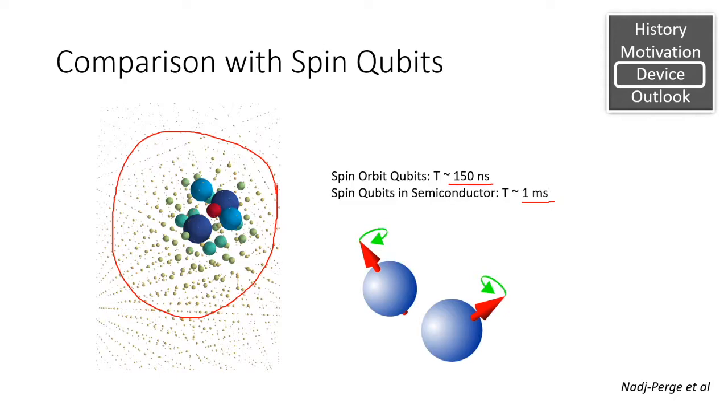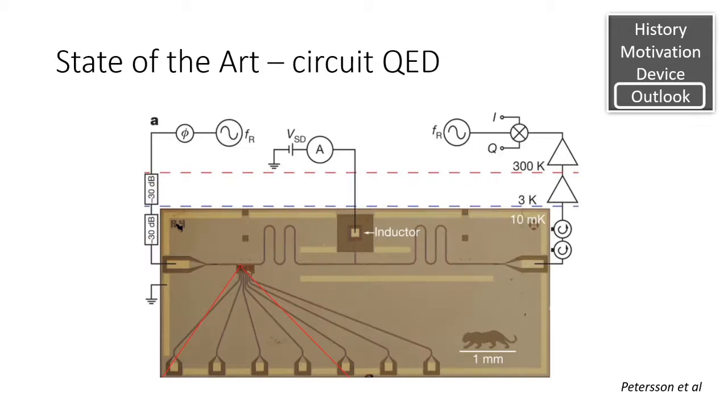So as great as spin-orbit qubits are, they heavily suffer in coherence times, and this poses a great challenge to using them in quantum computers.